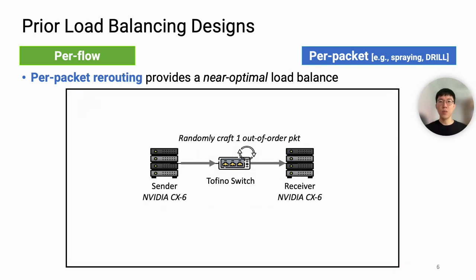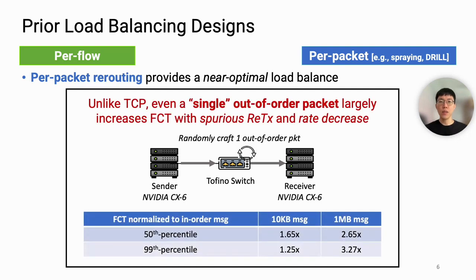To demonstrate this, we performed an experiment to measure the effect of out-of-order packets by selecting one random packet and artificially delaying its transfer. We find that unlike TCP's three-duplicate ACK, RDMA has no tolerance to out-of-order packets, and even a single out-of-order packet largely increased flow completion time by up to three times.